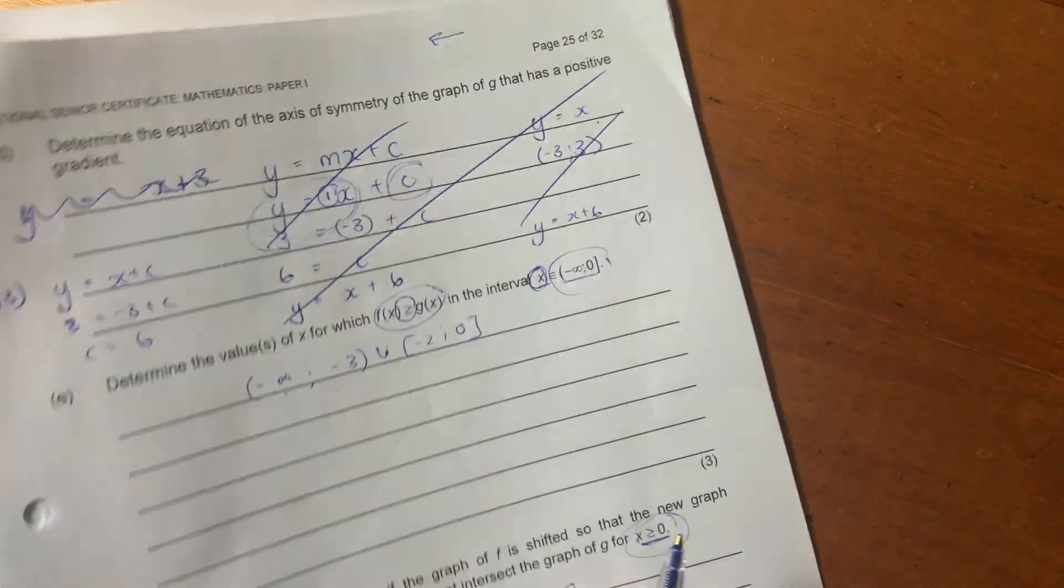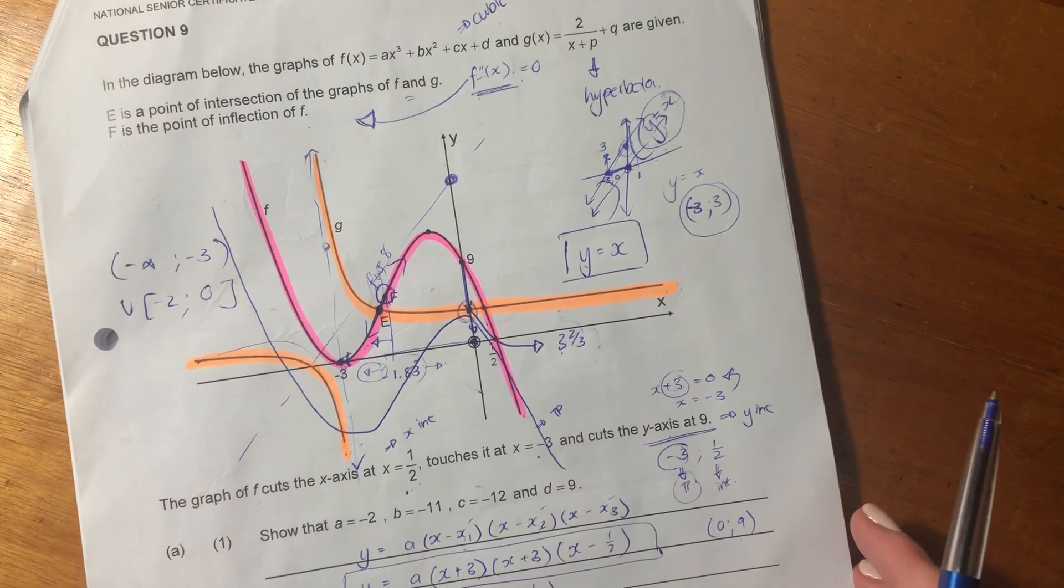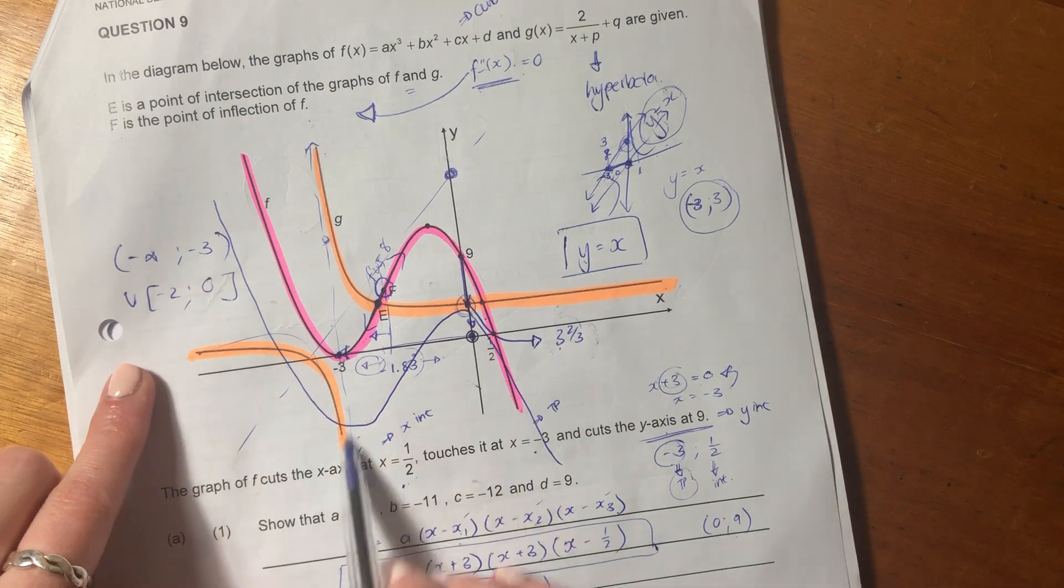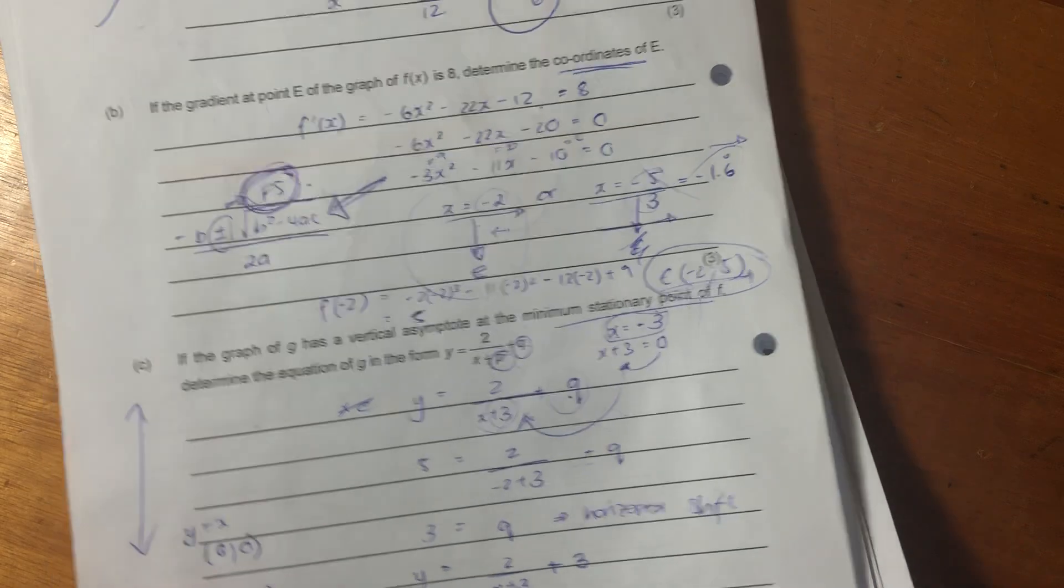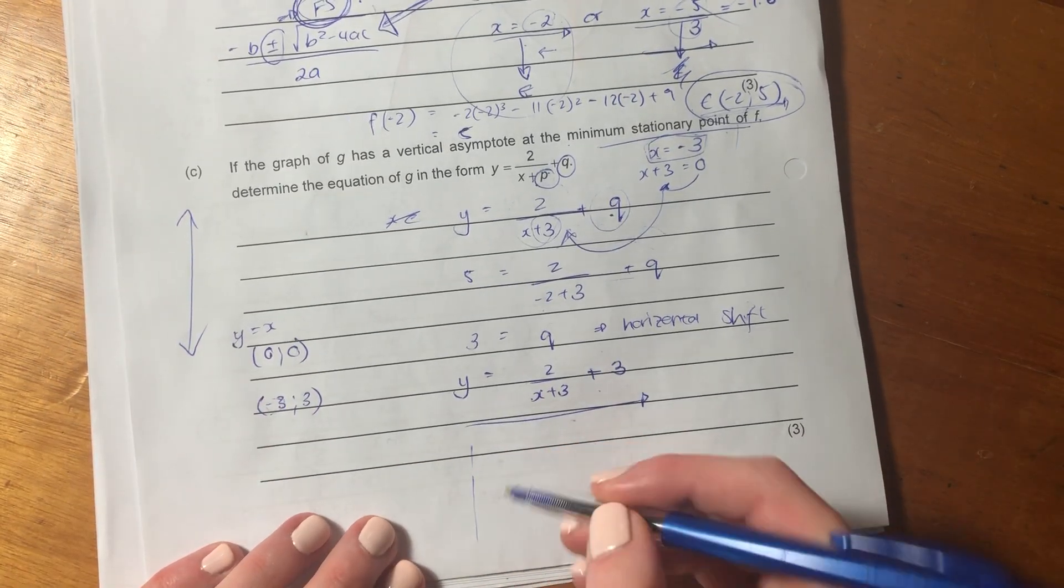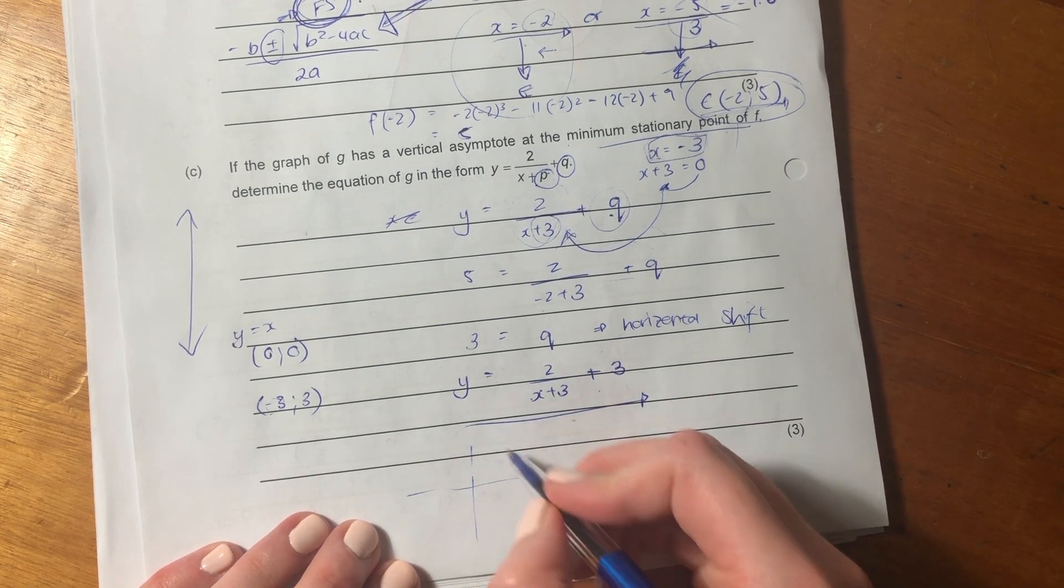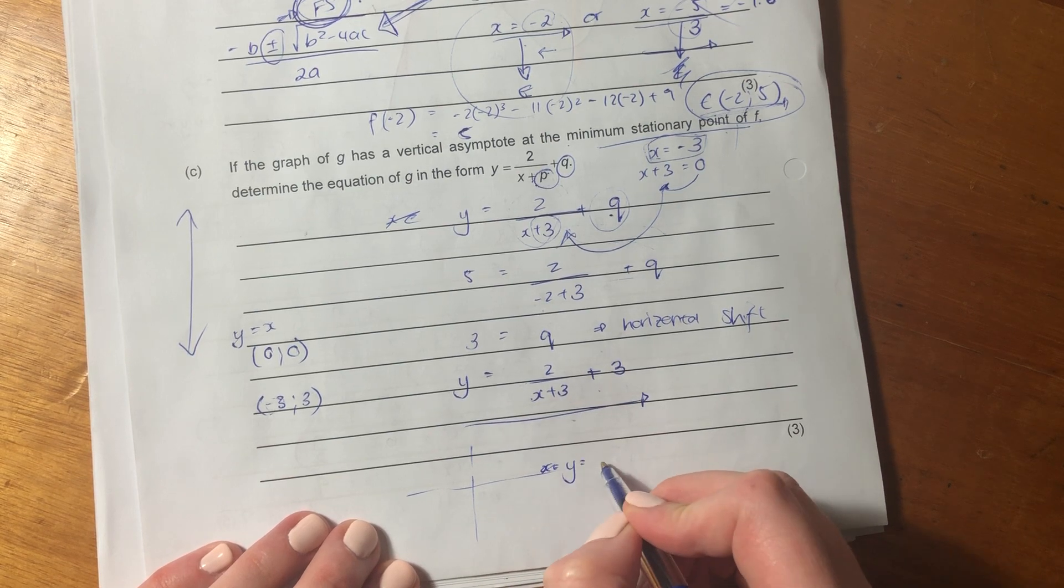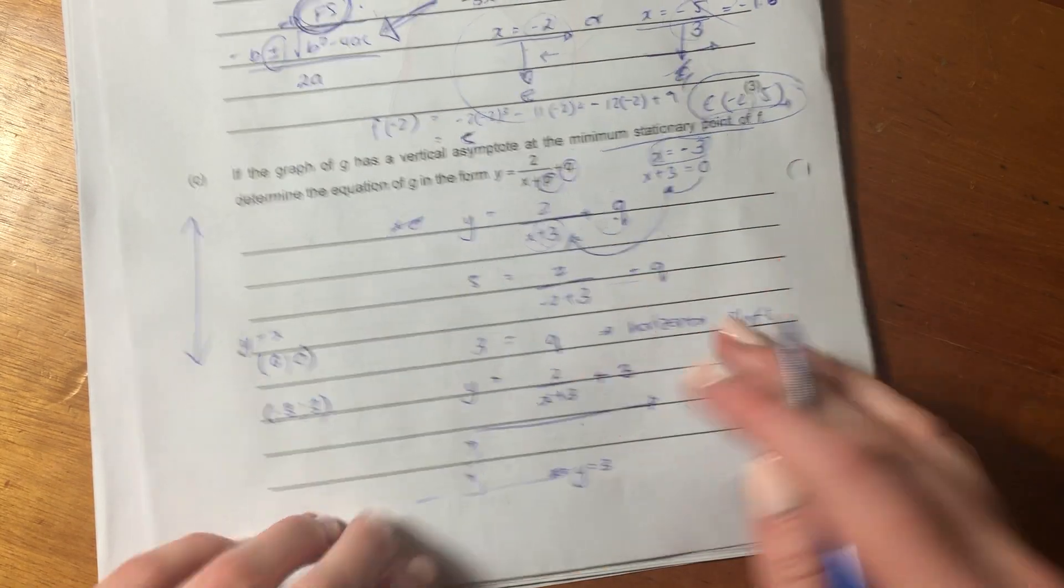It says, determine the equation of the axis of symmetry of the graph of G that has a positive gradient. Now, what's important here, let's go back to the graph, and I know I've made a right mess of it, but let's just remember what's going on. Here is the hyperbola, and we know it's been shifted.